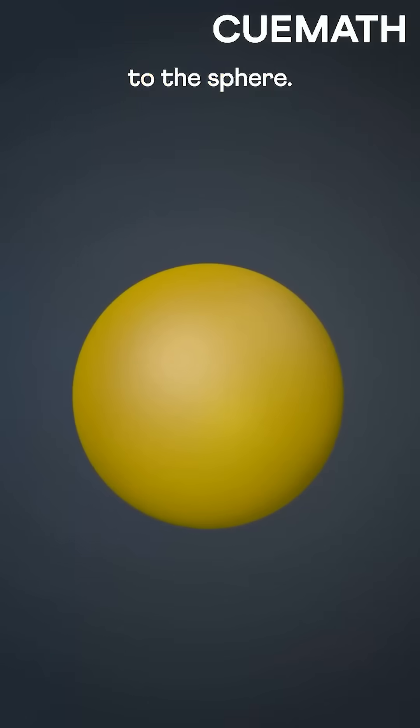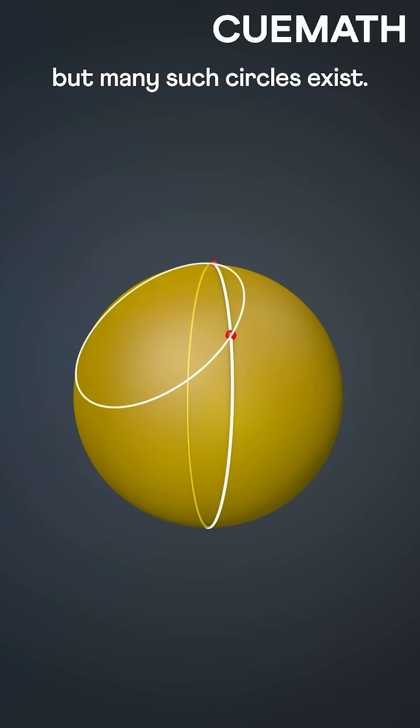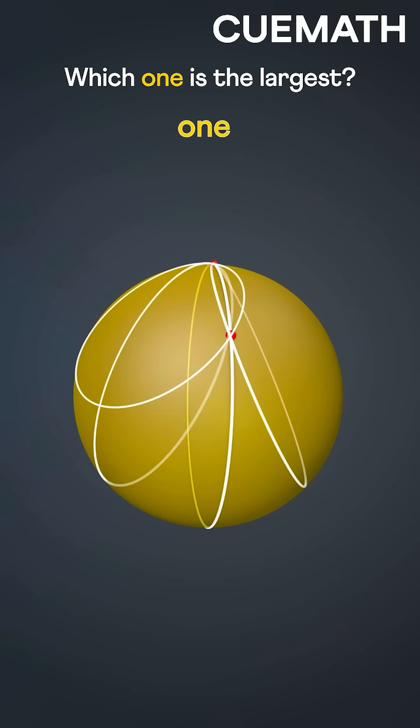The same applies to the sphere. We can join these two points by an arc along the sphere. This is the corresponding circle. But many such circles exist. Which one is the largest?